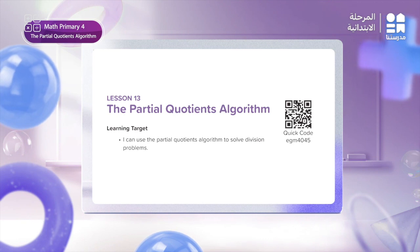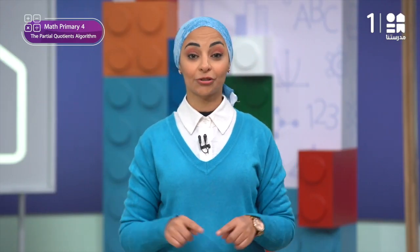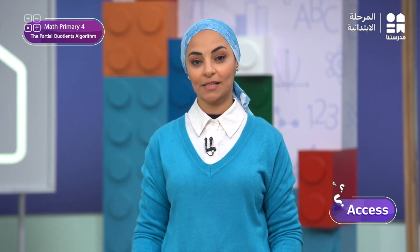In the previous lesson, we learned the first way to solve division problems, which is the area model strategy. In today's lesson, we will learn about the partial quotients algorithm and how to use it to solve problems. Now, let's start by revising the area model strategy for division. We will do this in the activity Model Match on page 311 in your school book.